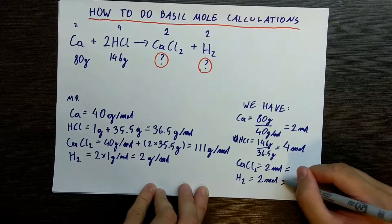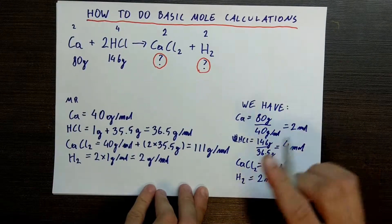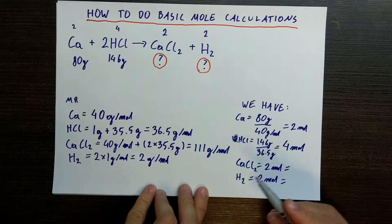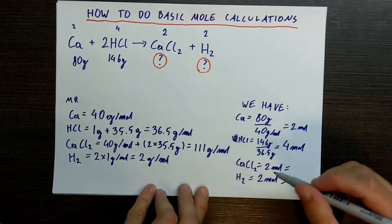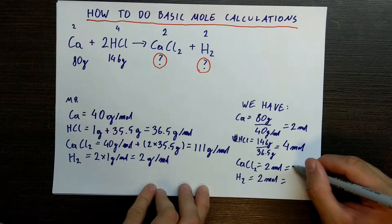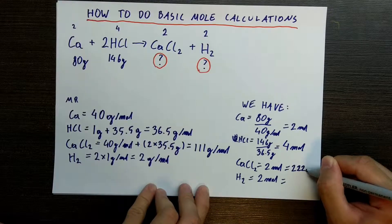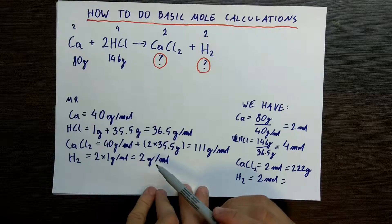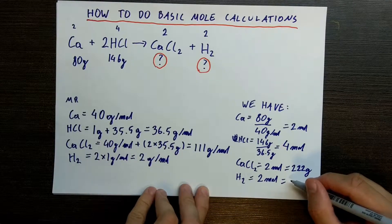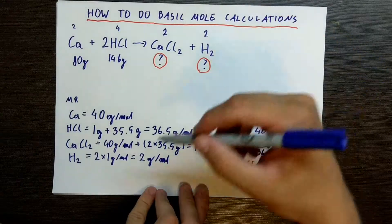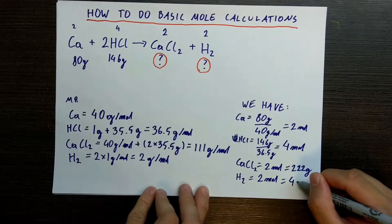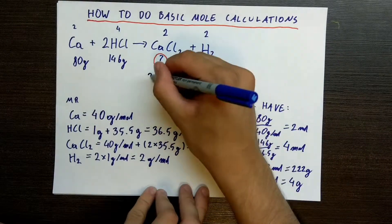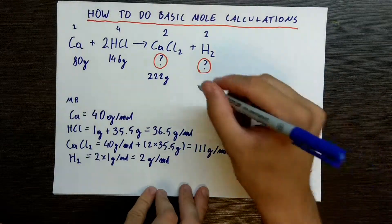Now we just need to convert moles to masses. Knowing the molecular masses, calcium chloride is 111 grams per mole and we have 2 moles, so 2 times 111 is 222 grams. For hydrogen, we have 2 grams per mole and 2 moles, so that gives us 4 grams. So these are our answers: 222 grams of calcium chloride and 4 grams of hydrogen.